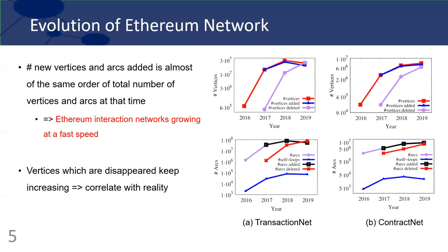We dive into the network exploration with the evolution of the network structures. We count the number and the changes of vertices and arcs. In this plot, the number of new vertices and arcs added are almost the same order of magnitude as the total number of vertices and arcs at that year. This actually indicates the Ethereum network is growing and updating at a very fast speed.